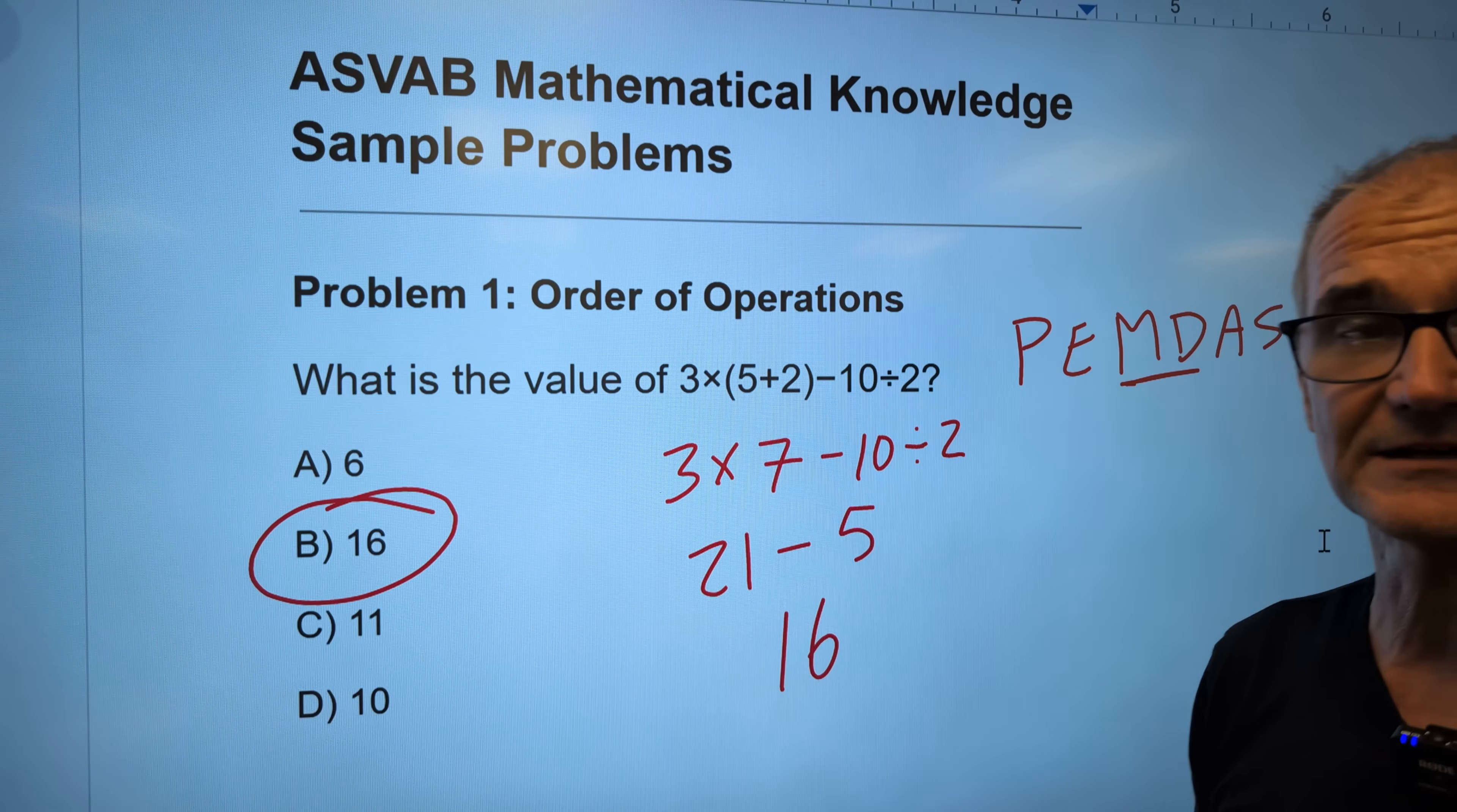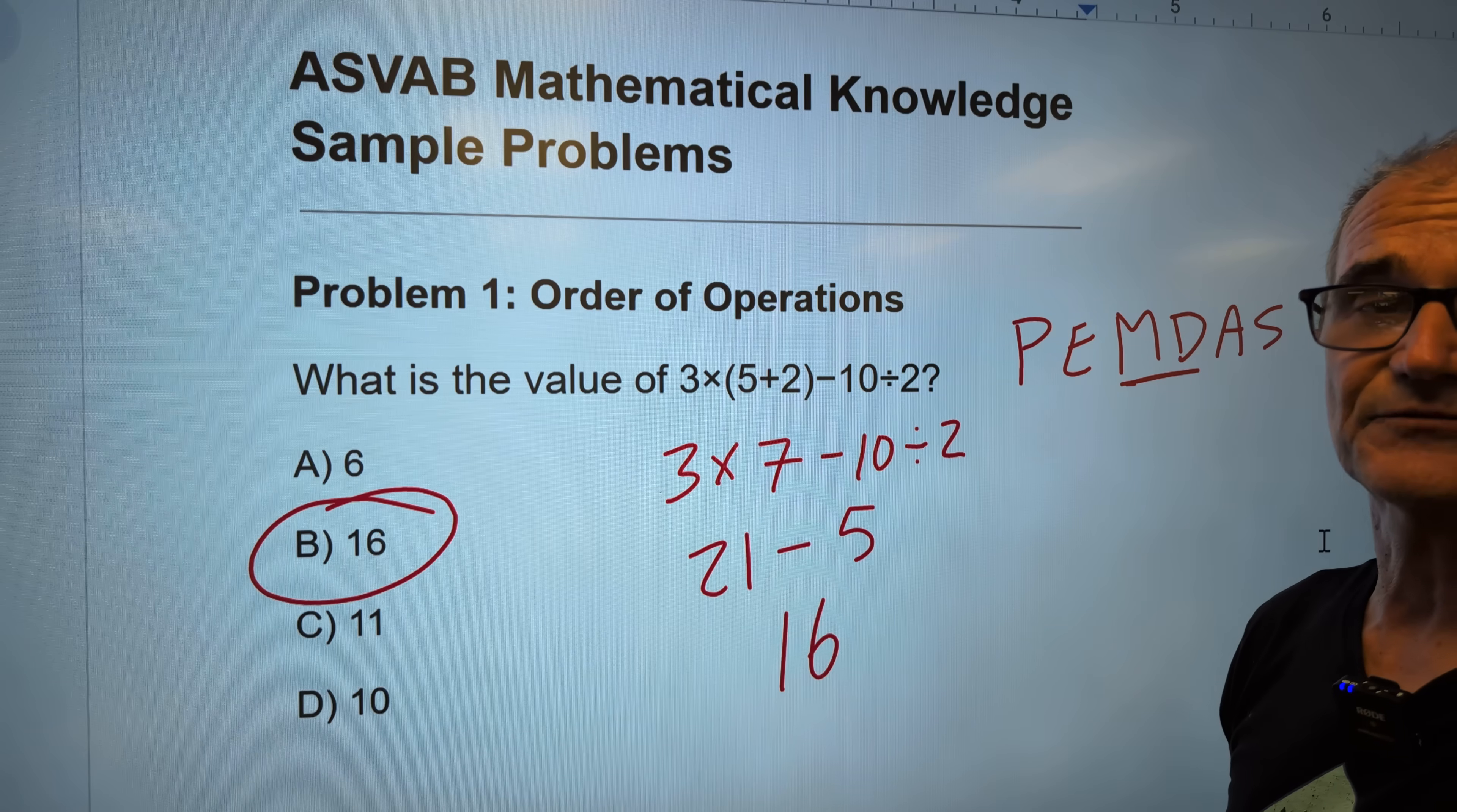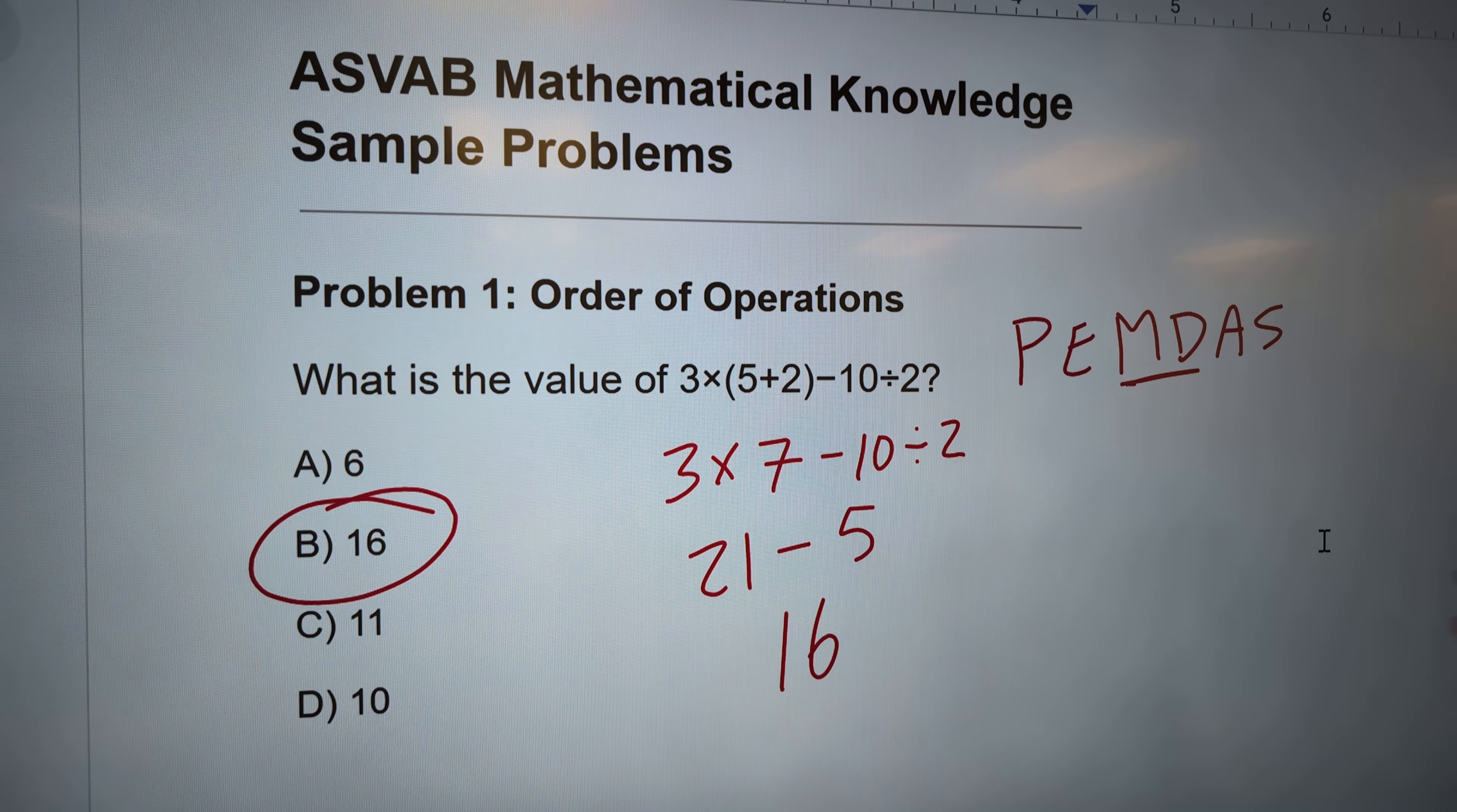21 minus 5 is 16. Correct answer, answer B right there. If you're not getting these right, time to do some more studying. I have a whole math course called Math Test Success. It's a free booklet you could download online or buy on Amazon for a little bit over 10 bucks. Video walks you through every chapter.